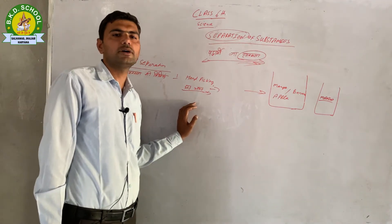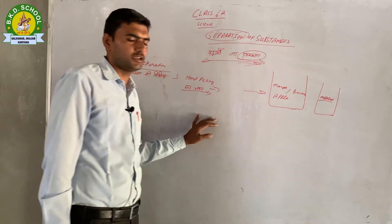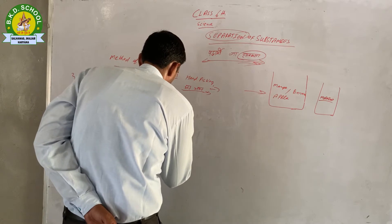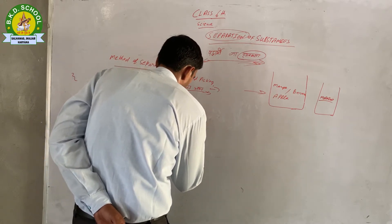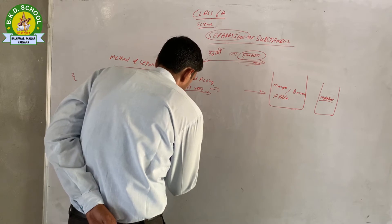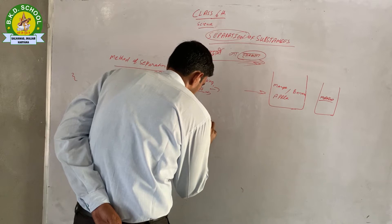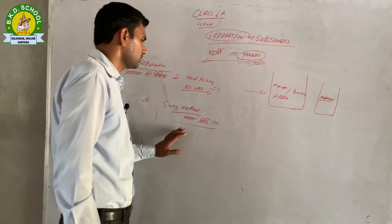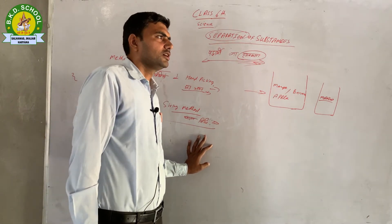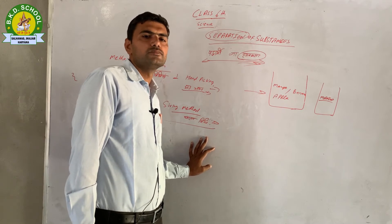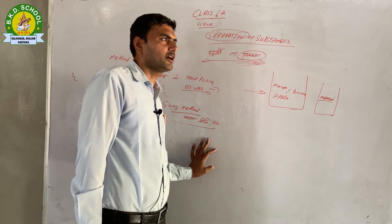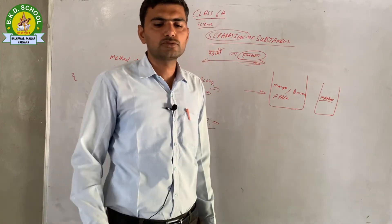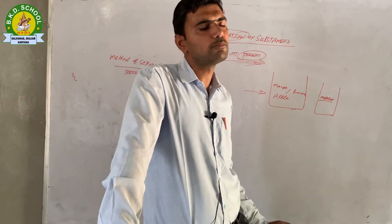दूसरा आता है — Sieving Method, चालन विधि। यह विधि तब काम में आती है जब मिश्रण के घटकों के आकार में काफी अंतर हो — एक चीज़ बारीक हो और दूसरी चीज़ का साइज़ बड़ा हो।